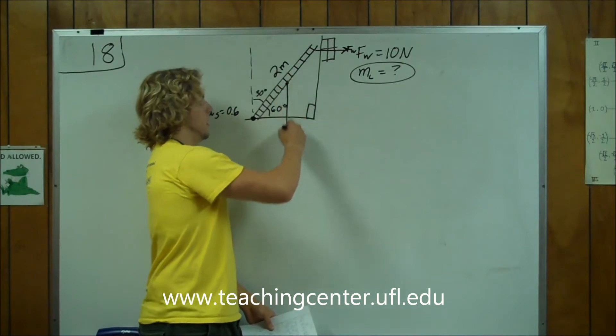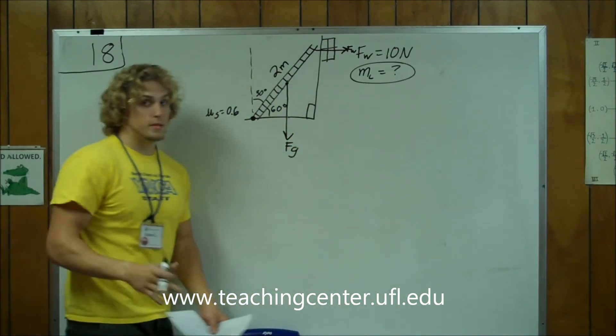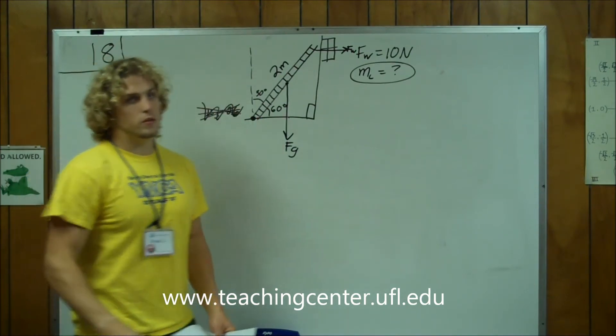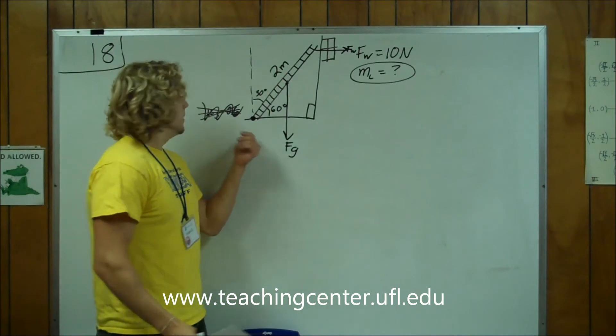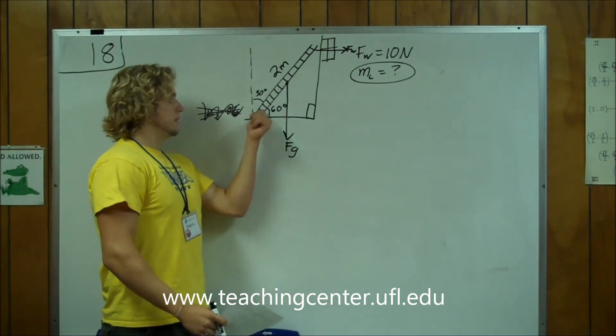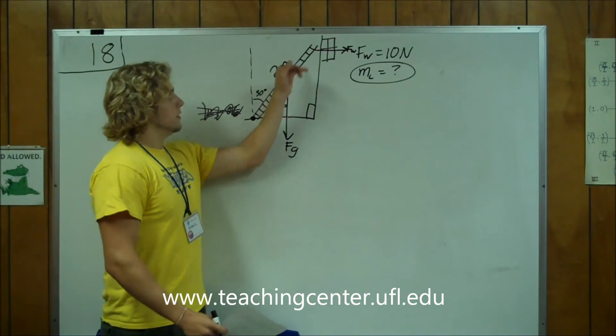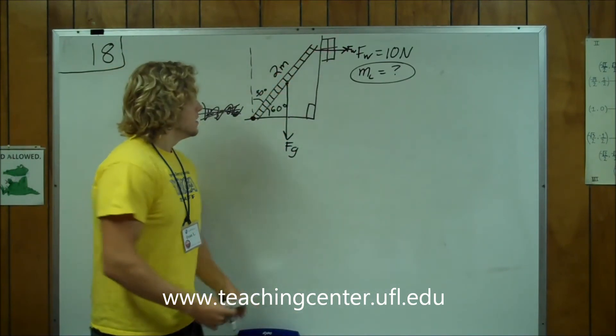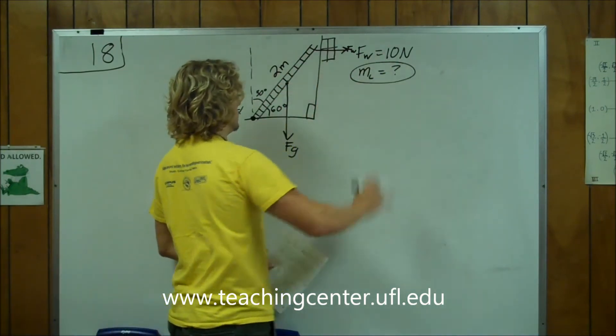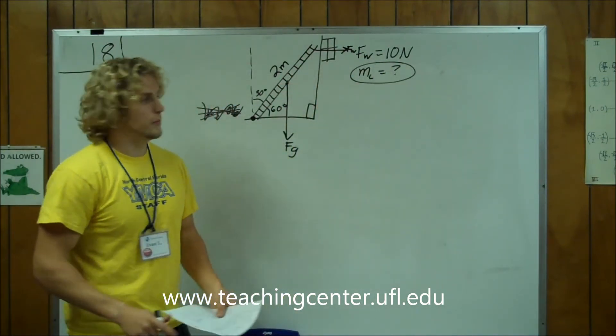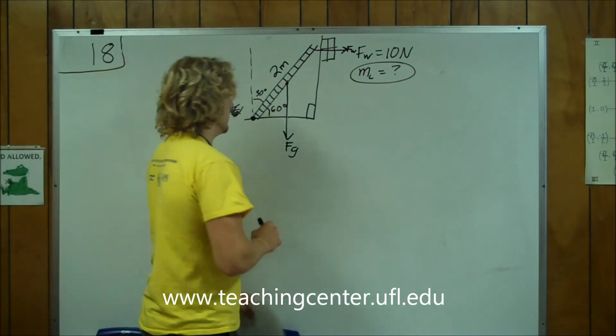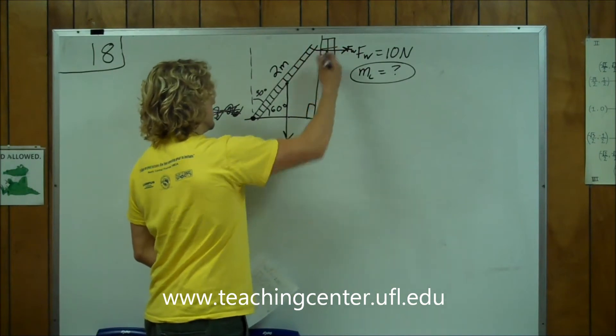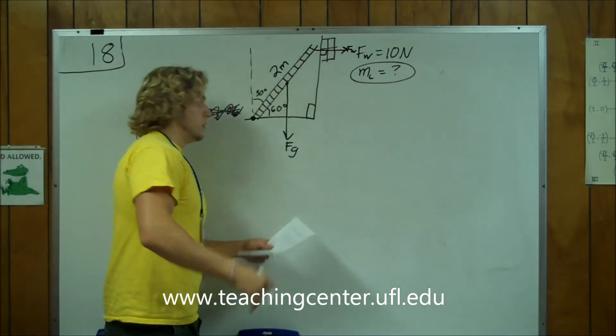What other forces do we have to deal with? We have FG. I'm telling you right now, you don't need this at all. It's very confusing. You don't need to worry about that because we're not dealing with the ladder slipping. We're dealing with the window breaking and how heavy the ladder can be. So really, this force and that force are the only things that you need to worry about. How do we relate the two? We have this going straight down and that going straight into the window.